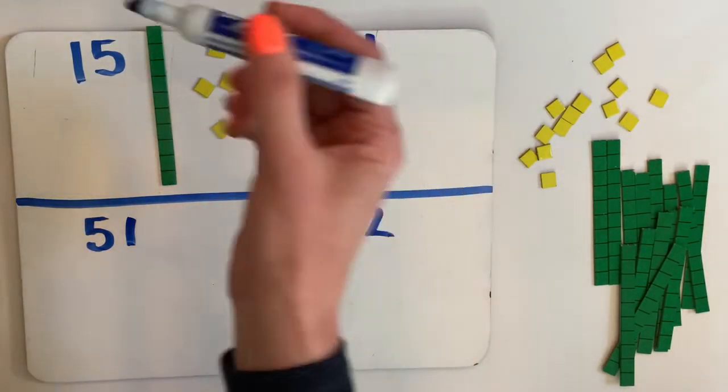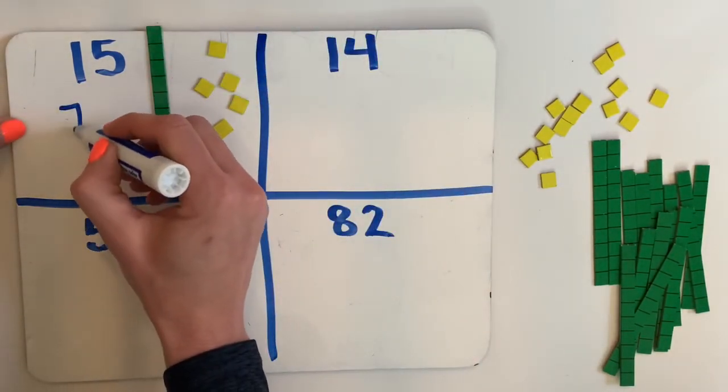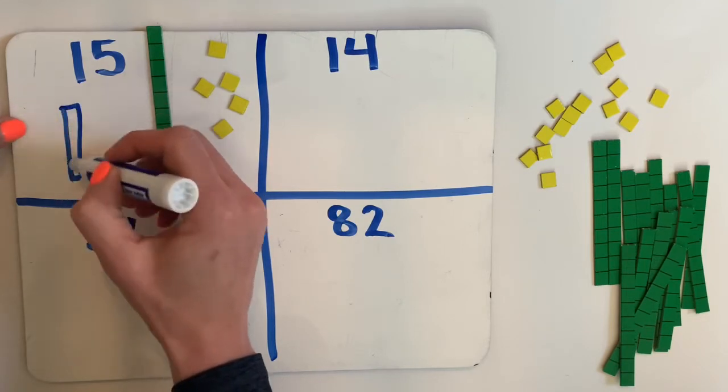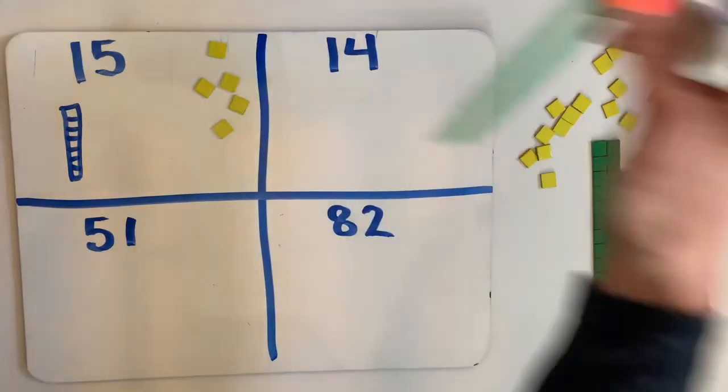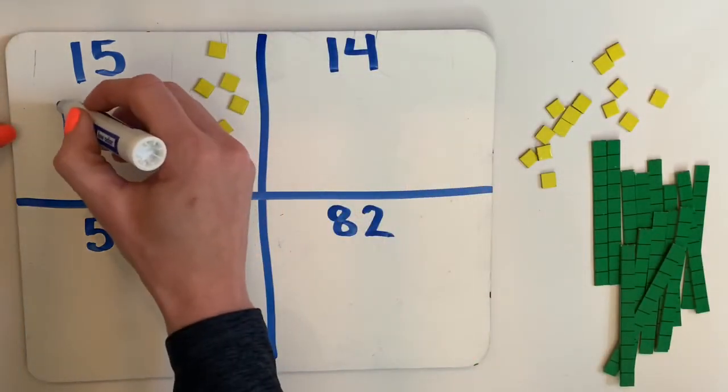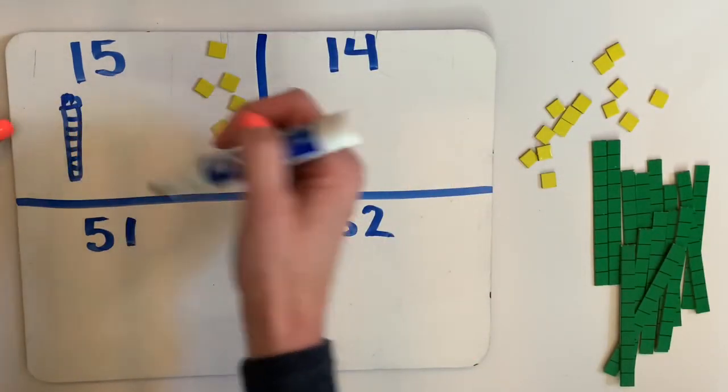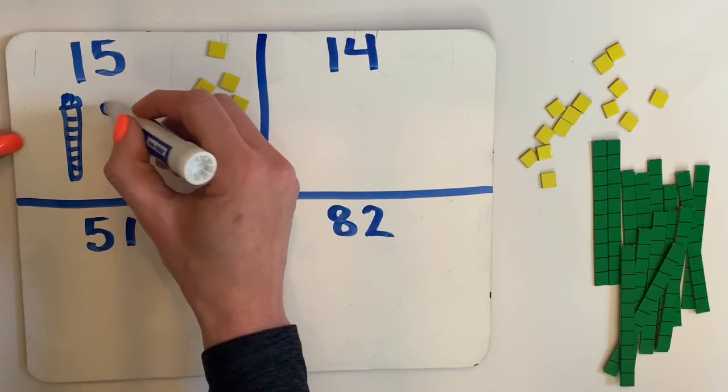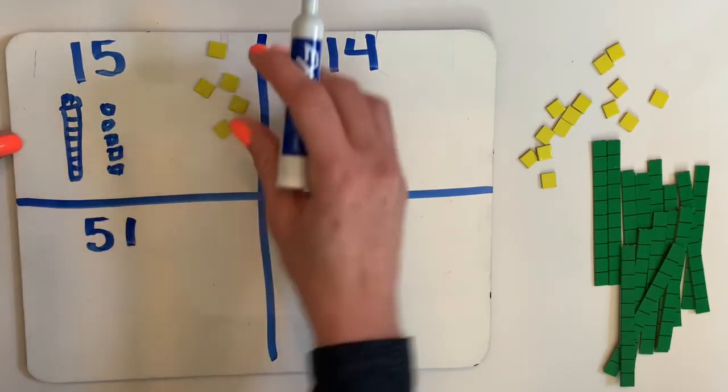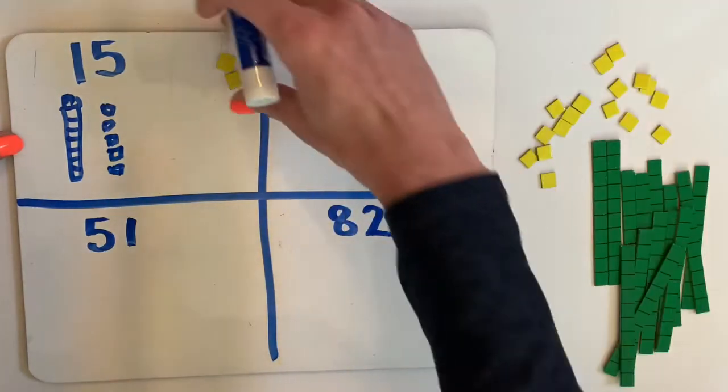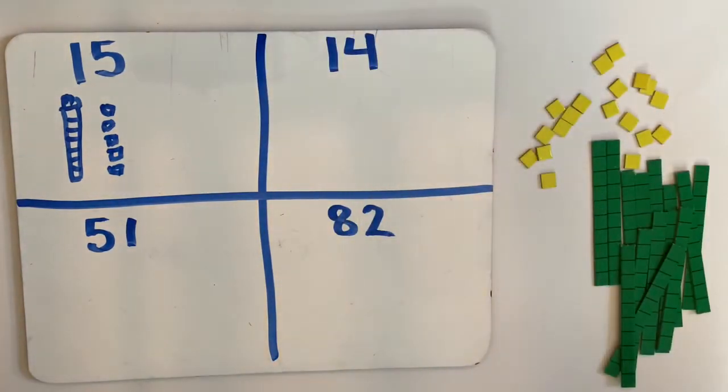So what I want you to do is I want you to draw them like they were base 10. So 15, I'm going to draw my 10 and for my 10 I can just draw one long stick. If you want to make all the little squares you can. And how many ones am I doing? 1, 2, 3, 4, 5. So your work today I'm going to give some different numbers. That's how I want you to draw them.